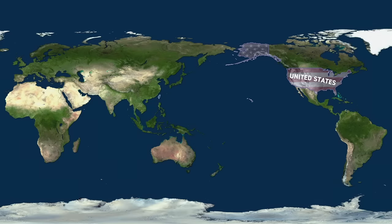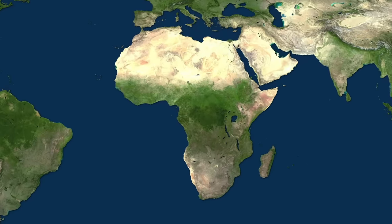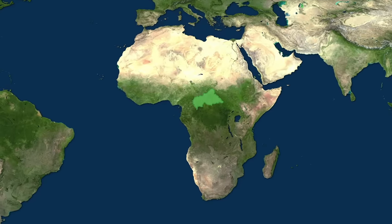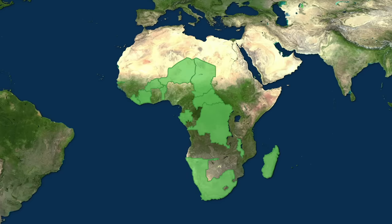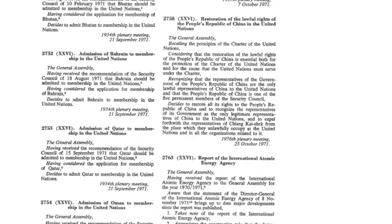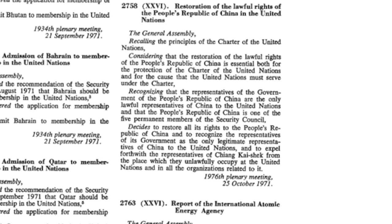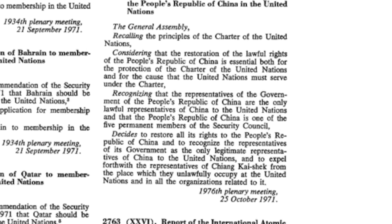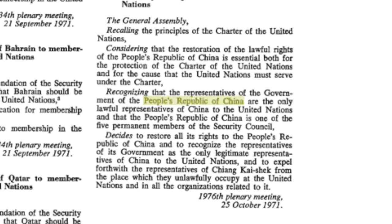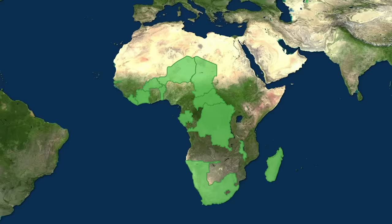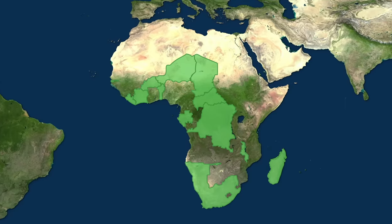Among the 35 countries that voted against the People's Republic were much of Africa—the Central African Republic, Chad, Gabon, Liberia, Niger, South Africa, and plenty of others that sided with the US. Despite the US's effort, the resolution ended up passing and the representative government for China in the UN was switched to the People's Republic of China. But what's interesting about this vote is not the result—it's who voted against the People's Republic.